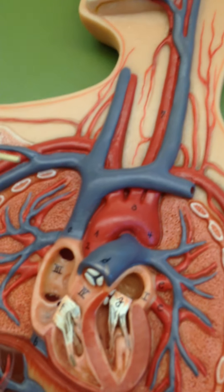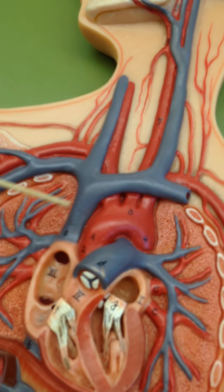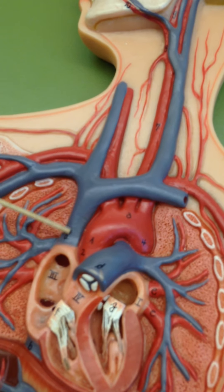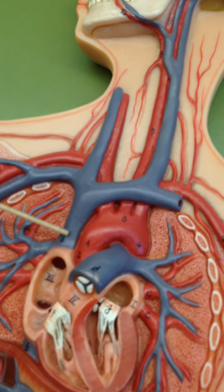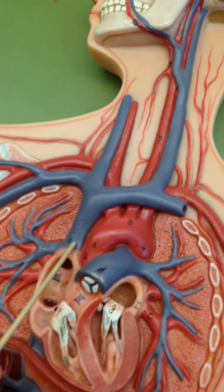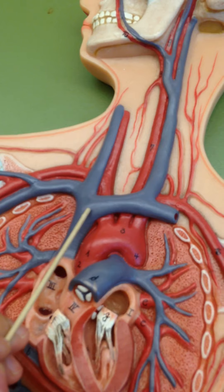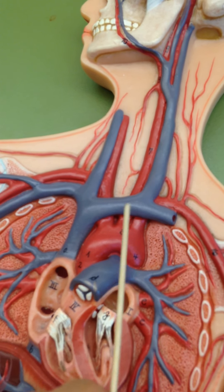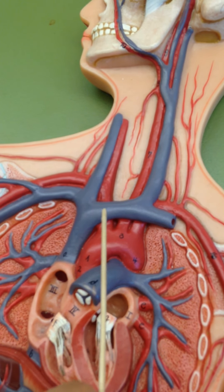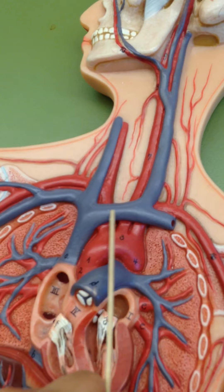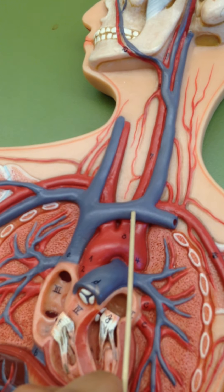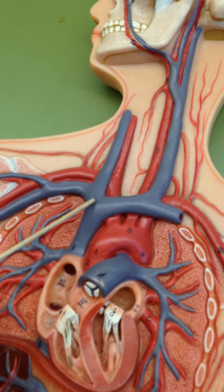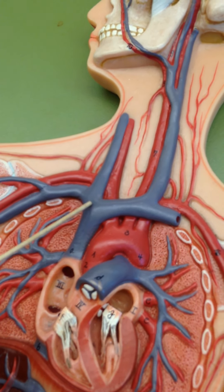Let's go ahead and look at the superior vena cava right here. The superior vena cava is going to branch — this is going to be the left brachiocephalic vein and this one's going to be the right brachiocephalic vein.